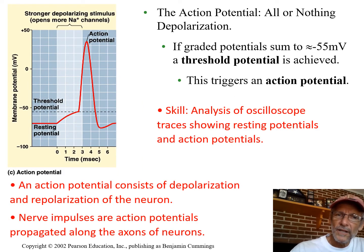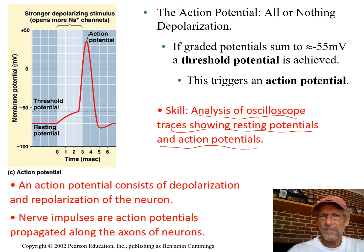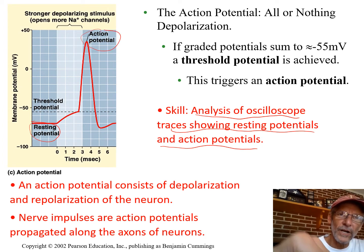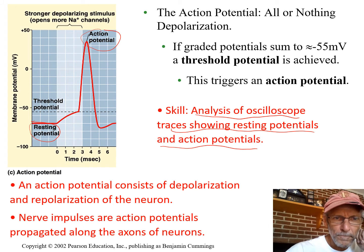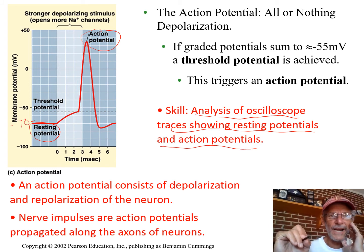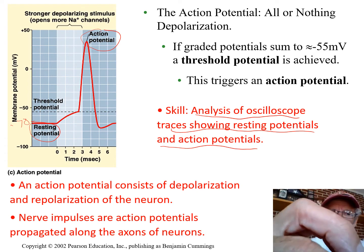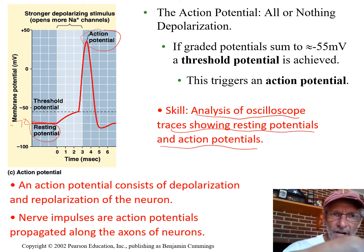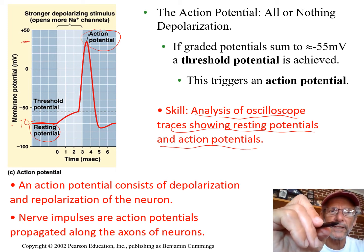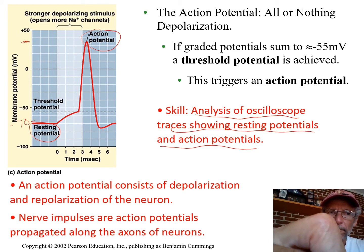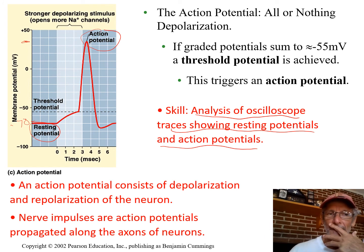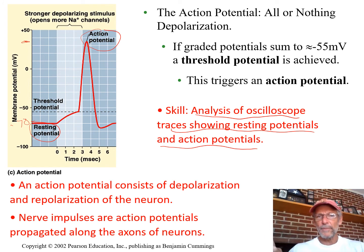Here is something you might have to analyze: where in this diagram is resting potential, and where is the action potential? They won't be labeled like in this diagram — you'll just get the graph. Down here at negative 70 is resting potential. This big spike up here, where the inside actually became positive compared to the outside, is the action potential. That happened because a bunch of sodiums came in.